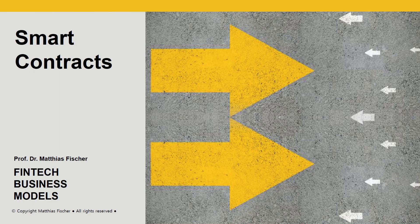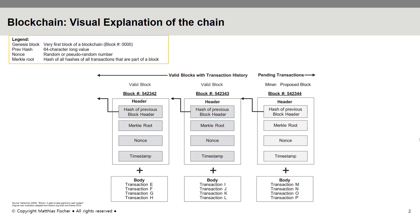In order to understand what smart contracts actually are, we have to understand what the blockchain technology is and how it works. Please find in the top left corner the legend for the current figure. The blockchain, also known as a decentralized ledger, is nothing else than a long string of connected blocks which store various kinds of data.